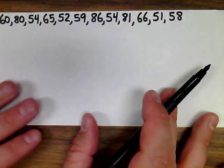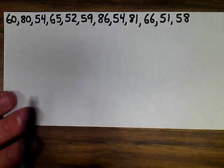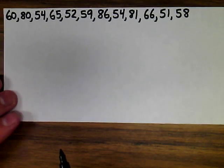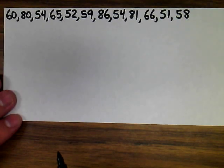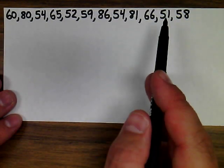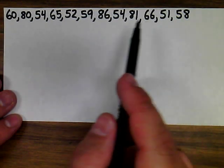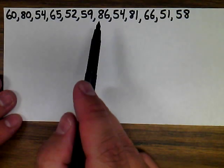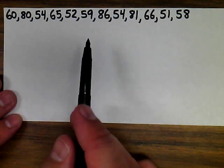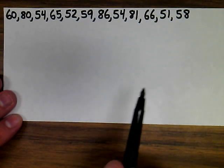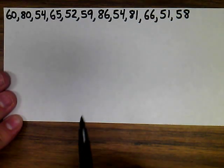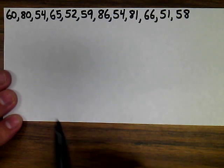Now we're going to look at a different set of data that is much more spread apart. One of the disadvantages of a line plot is that you must include every single number. I wouldn't want to use a line plot here because my lowest value is 51 and my highest is 86 — that would make my line plot over 20 numbers long. Instead, I'd want to organize this in a stem and leaf plot.